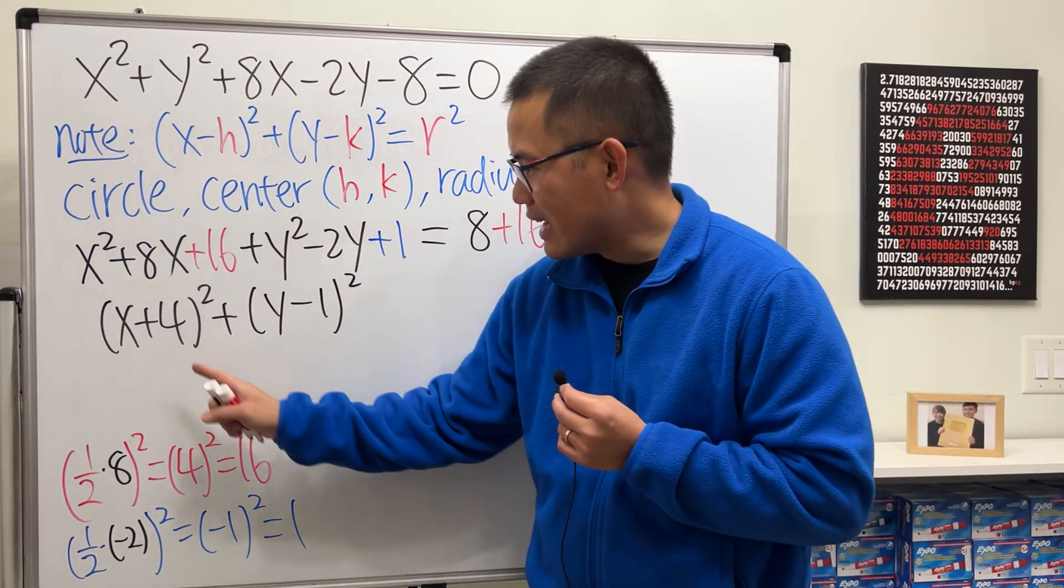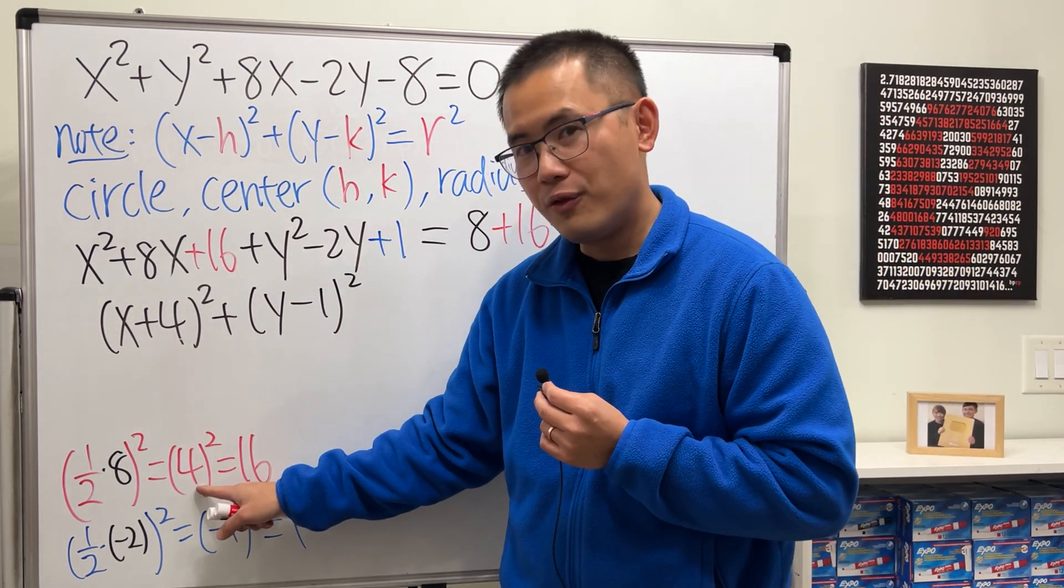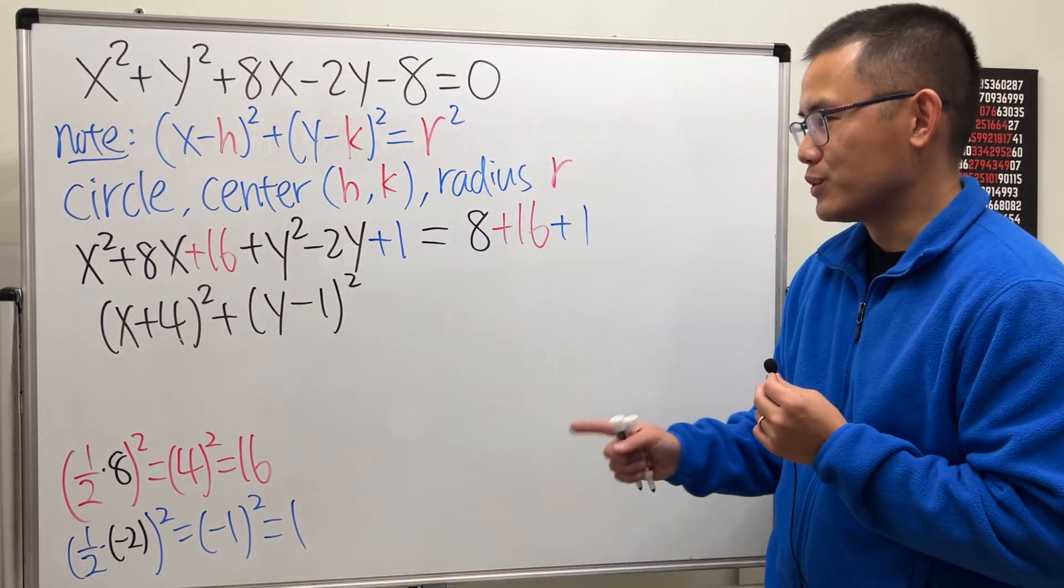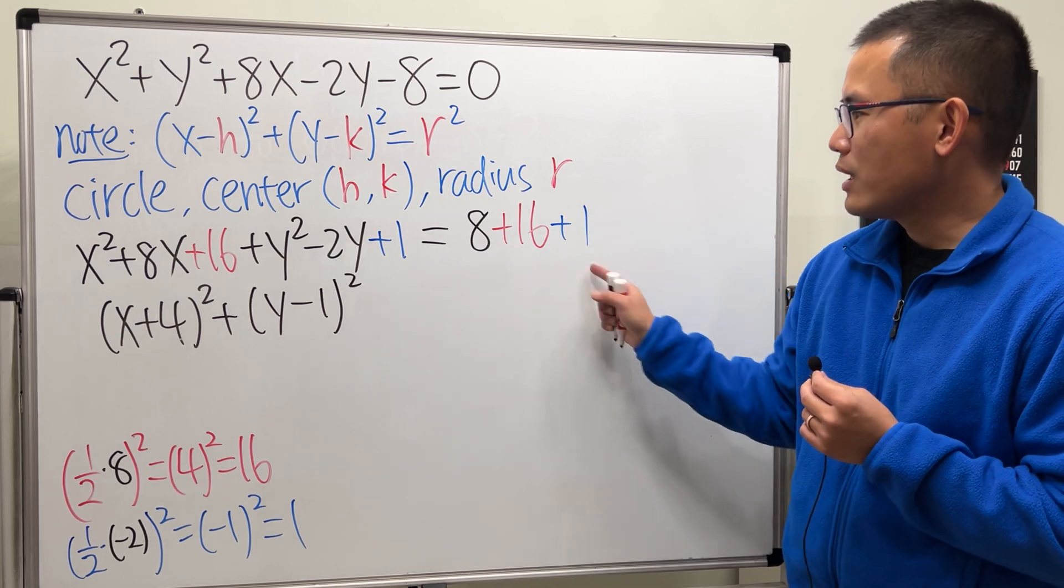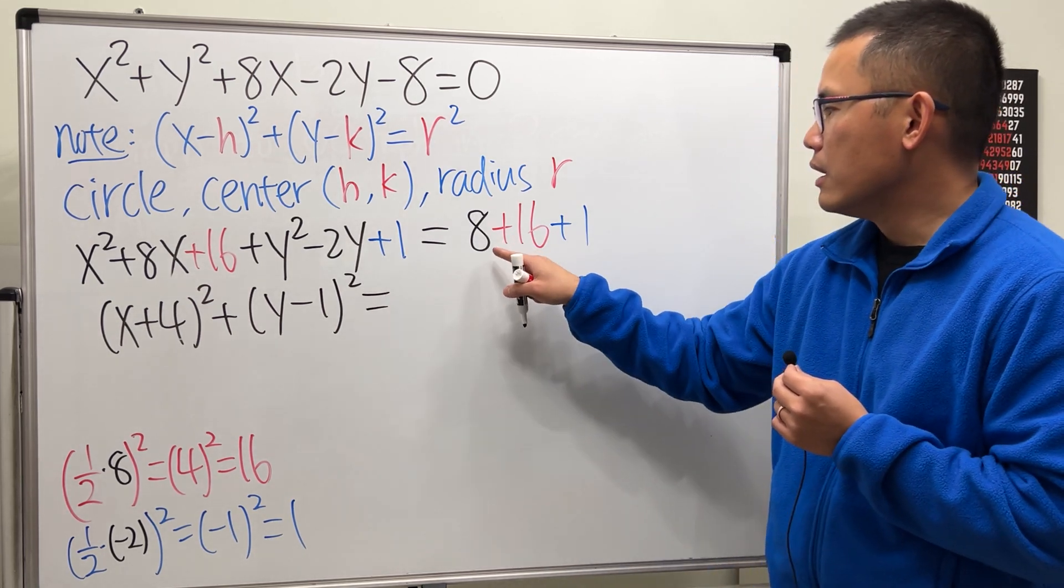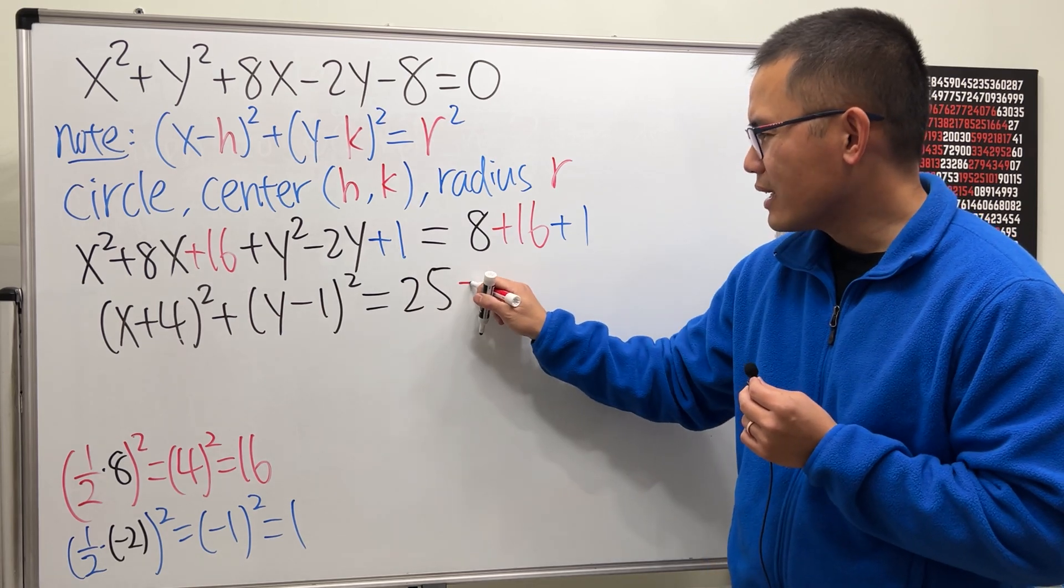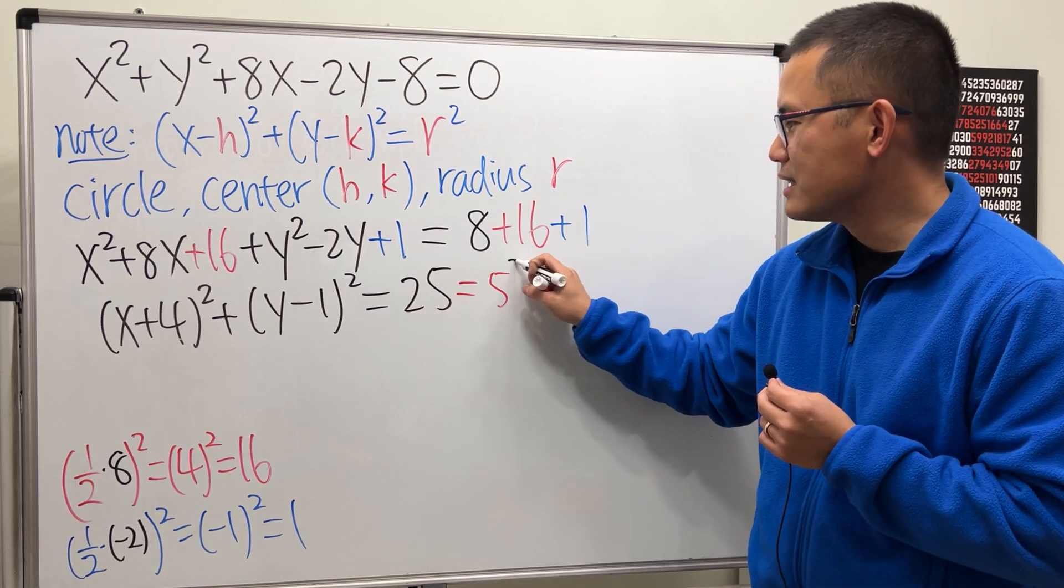And one thing to note is that the +4, it can be from here, and then the -1, you can just look at it from here. It always works. And then right here, you can see a +16 +1 altogether is 25. But you have to know that this right here is 5².